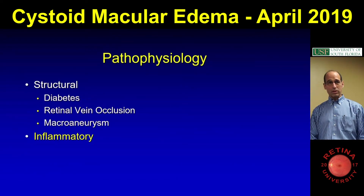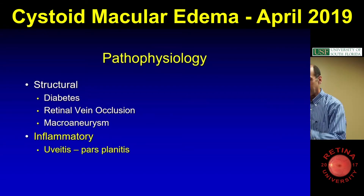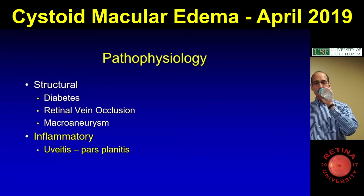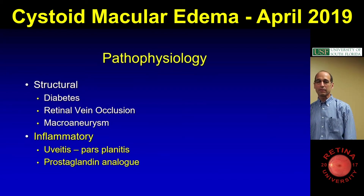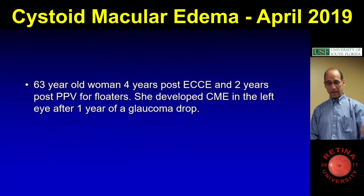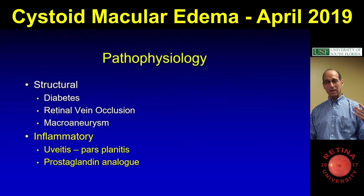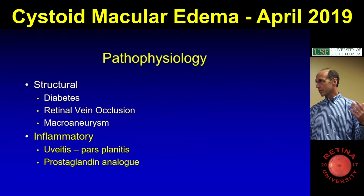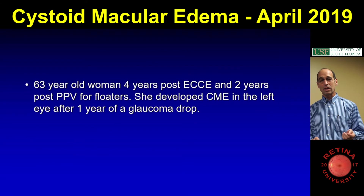So then inflammatory — your inflammatory causes of macular edema are all the uveitises. Pars planitis is the one you'll see most commonly. And then also the prostaglandin analogs. Pseudophakic macular edema is probably inflammatory just because anti-inflammatories treat it.